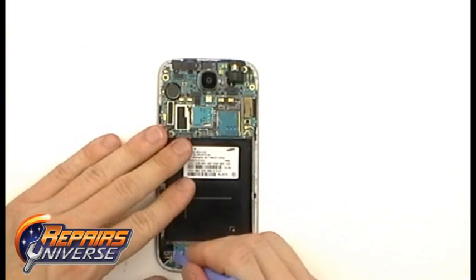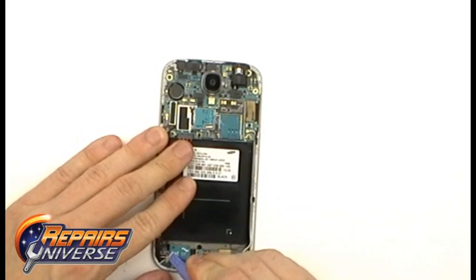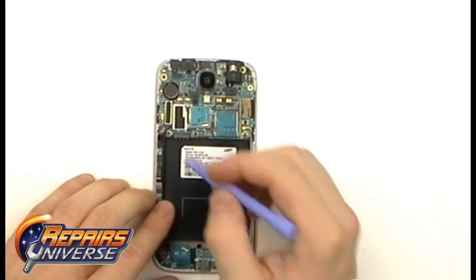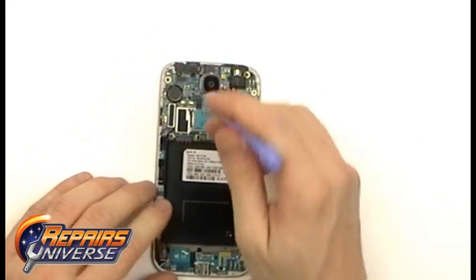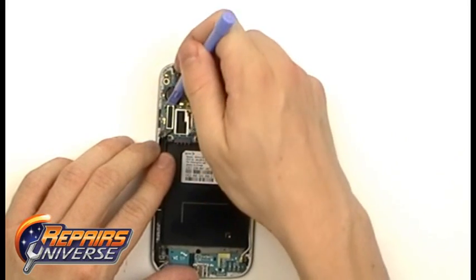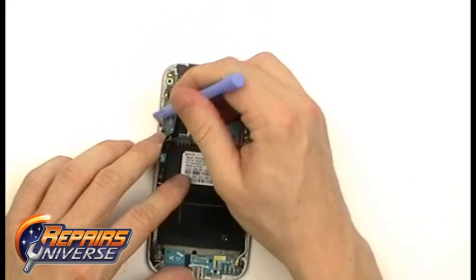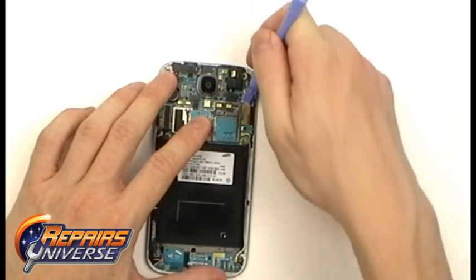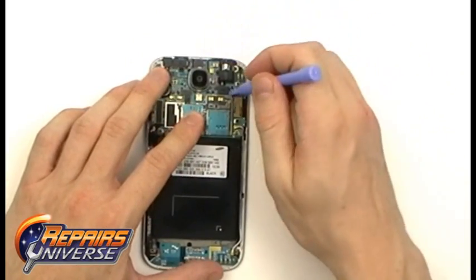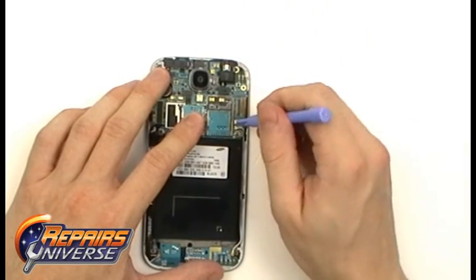These first two connections are just antenna connections that just need to be released using a safe open pry tool. We then have one pop connection, two pop connections, another antenna, another pop, and lastly, another antenna.